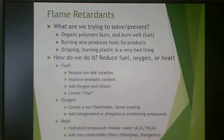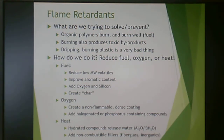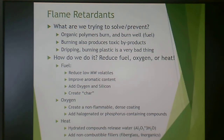In a house fire now, the smoke is extremely toxic, and dripping burning plastic is also an accelerant, which is very bad. So how do we keep something from lighting itself on fire or bursting into flame next to a heat source? We can reduce fuel, oxygen, or heat. In reducing fuel, we reduce the low molecular weight volatiles that might be part of a formulation. We can improve the aromatic content, add oxygen and silicon, and create char — in other words, it blackens rather than burns.